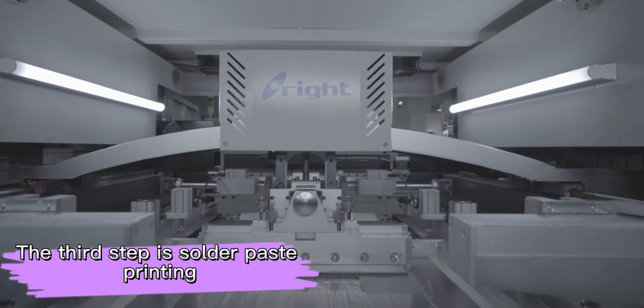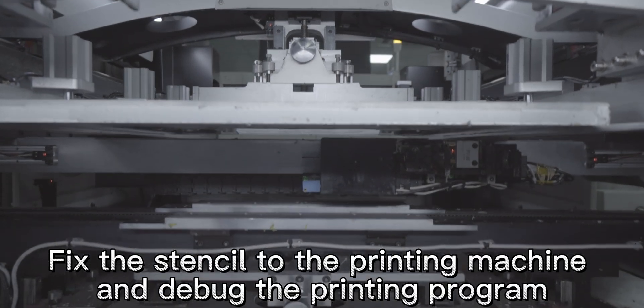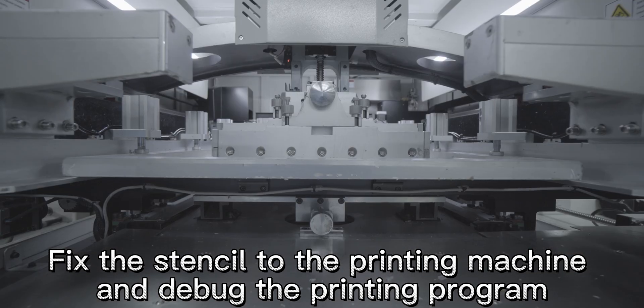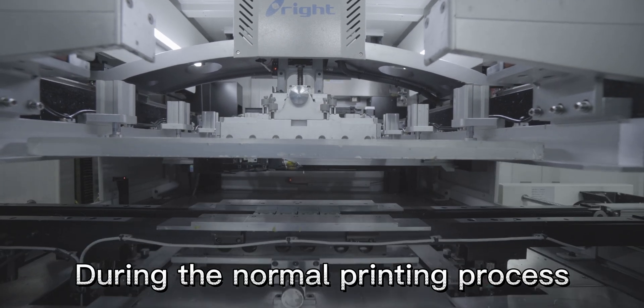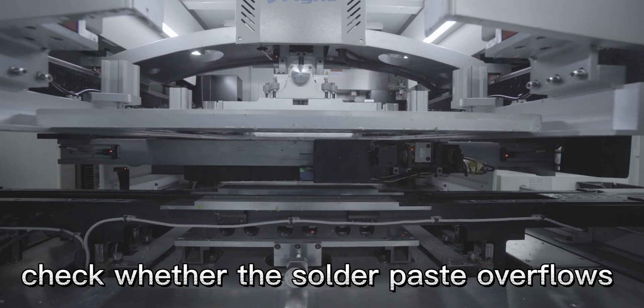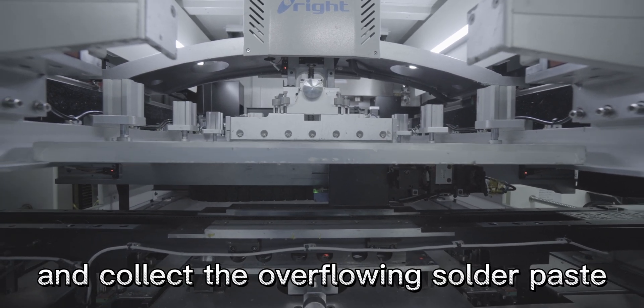The third step is solder paste printing. Fix the stencil to the printing machine and debug the printing program. During the normal printing process, check whether the solder paste overflows and collect the overflowing solder paste.